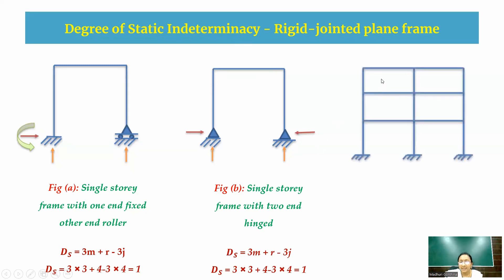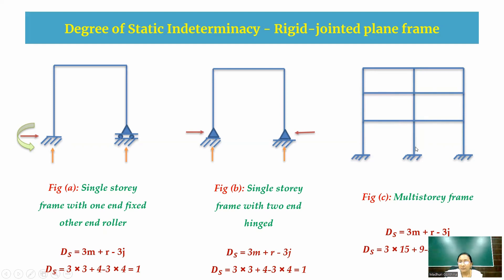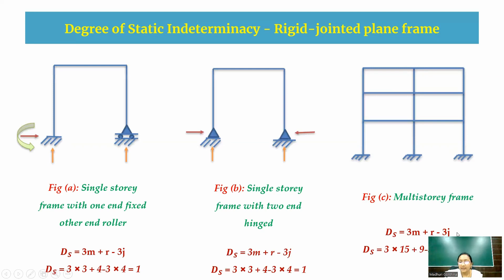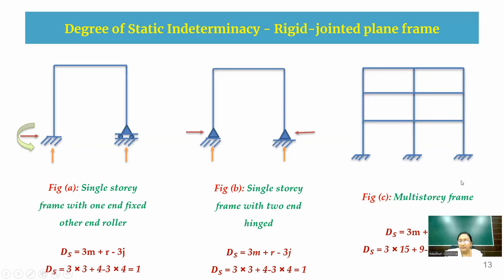For a multi-story rigid-jointed frame, counting gives 15 members and 3 fixed supports providing 9 reaction components, with 12 joints total. DS = 3(15) + 9 − 3(12) = 45 + 9 − 36 = 18. Therefore the degree of static indeterminacy for this multi-story frame is 18.